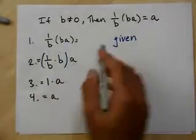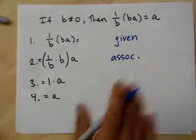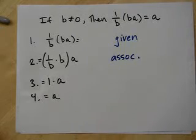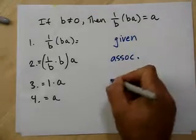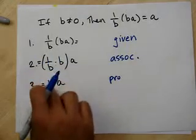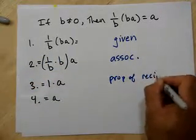Now, what I do here, all I do is I change the grouping. The associative property lets me do that. And what's the property that tells us that a number times its reciprocal? Give you one guess. Yep. Property of reciprocals. See, I turn the property of reciprocals to a number of reciprocals equals 1. Prop of reciprocals.